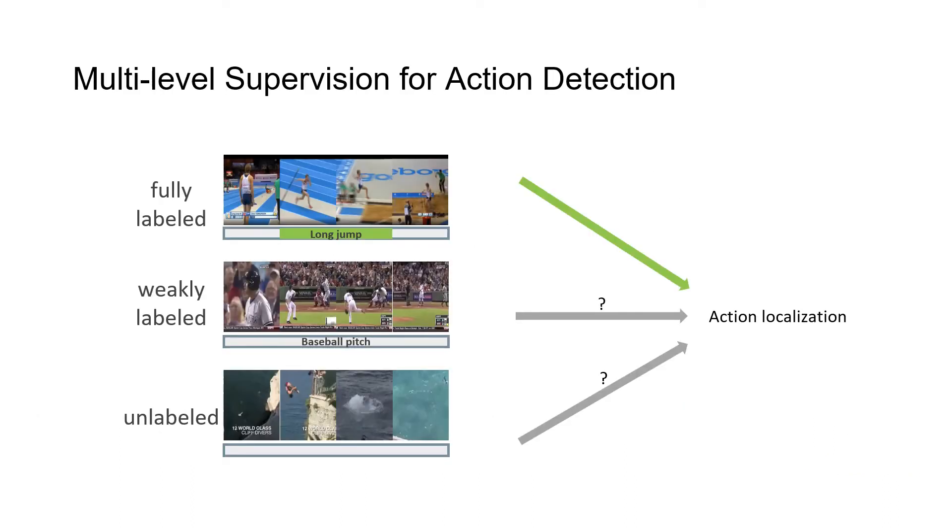In action detection, normally the training data has both the cluster label and the location of the action. The location is really hard to annotate, and this brings the question of how can we benefit our action localization model from weakly labeled data and unlabeled data.